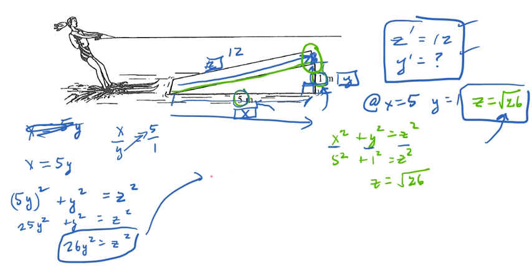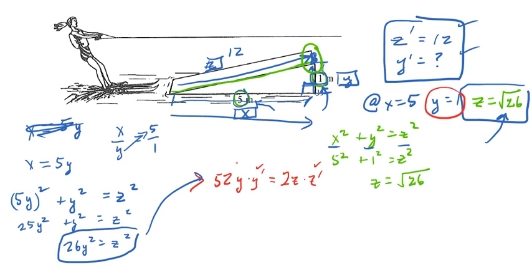Let's differentiate using red. Differentiating 26Y squared gives 52Y, and then by the chain rule — because we're differentiating with respect to time — we multiply by Y prime. On the right side, we get 2Z, and by the chain rule again, times Z prime. Z prime is 12, Y prime is what we're looking for, Y is 1, and Z is root 26. We can input all the known values and solve for the one unknown.